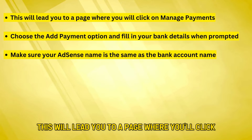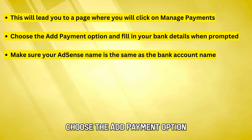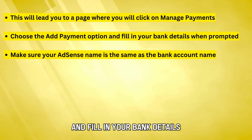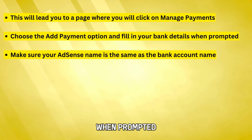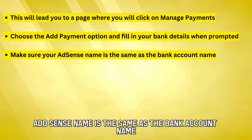This will lead you to a page where you'll click Manage Payments. Choose the Add Payment option and fill in your bank details when prompted. Make sure your AdSense name is the same as the bank account name.